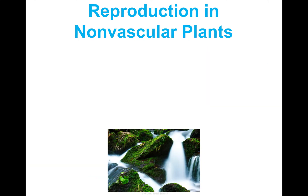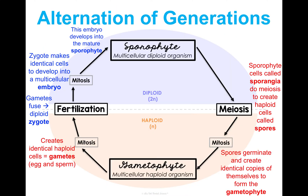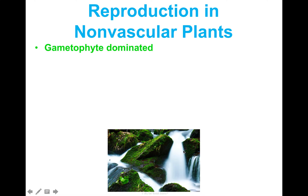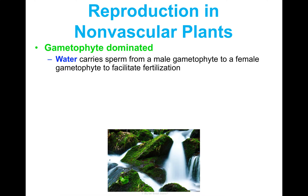First, reproduction in non-vascular plants — that's mosses, liverworts, and hornworts — all those that do not have xylem and phloem. Their life cycle is gametophyte dominated, so it's mainly in that part of the cycle, and the sporophyte part is reduced.